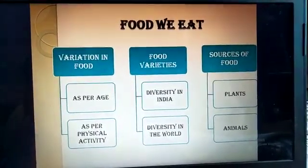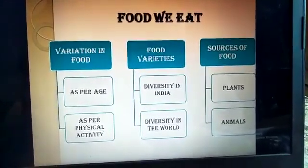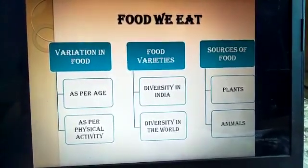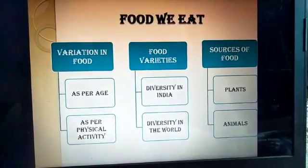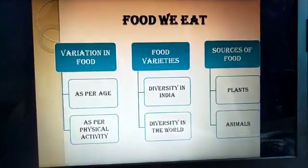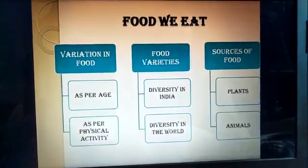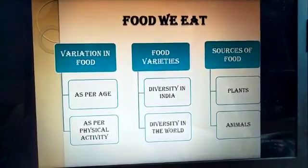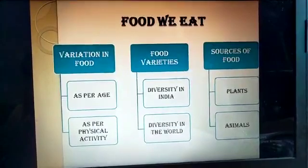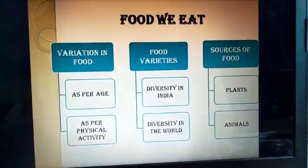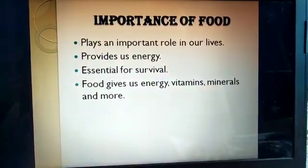Coming to the next point: sources of food. We get food either from plants or from animals. From plants we get vegetables, fruits, and cereals. From animals we get fish, meat, eggs, and many more things.